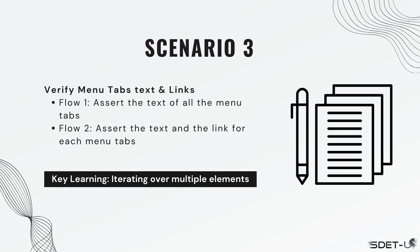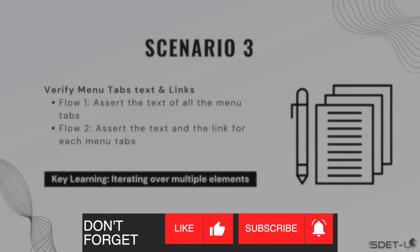We're making good progress and now it's time for scenario three, where we're going to try to get into complex flow by iterating over multiple elements. We're going to verify our menu tabs text as well as links. For the first flow we'll simply verify the text of all the menu tabs, and for the next flow we'll make sure all the tabs have text and links matching each other. The key learning here is iterating over multiple elements — finding them and looping through them.